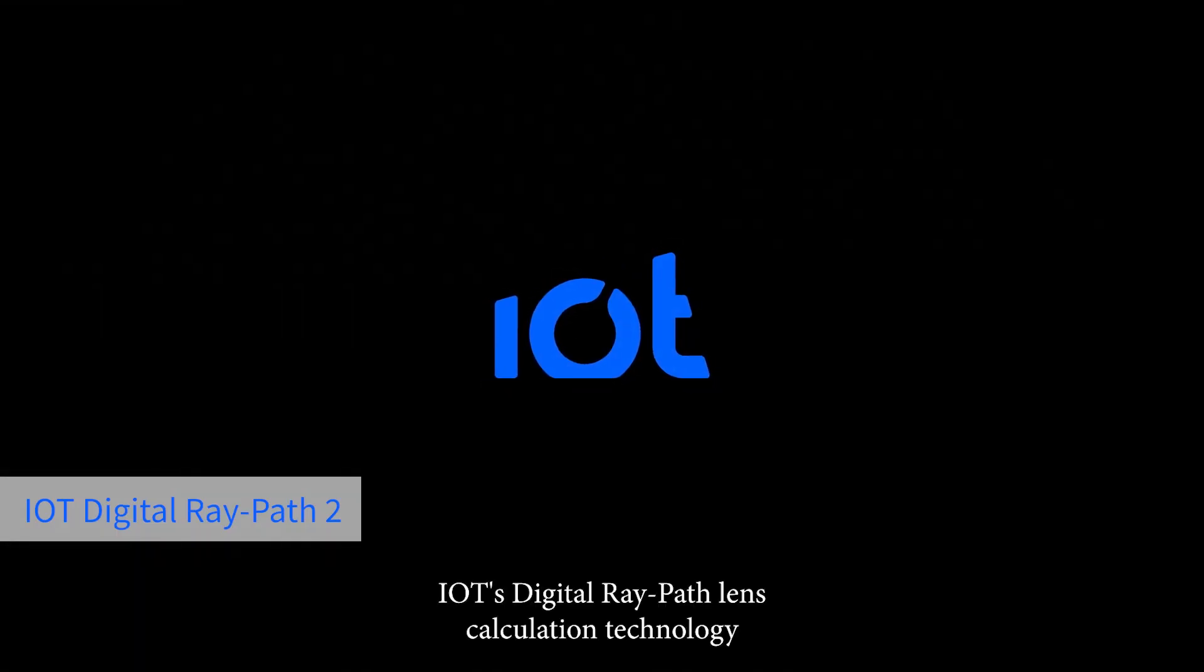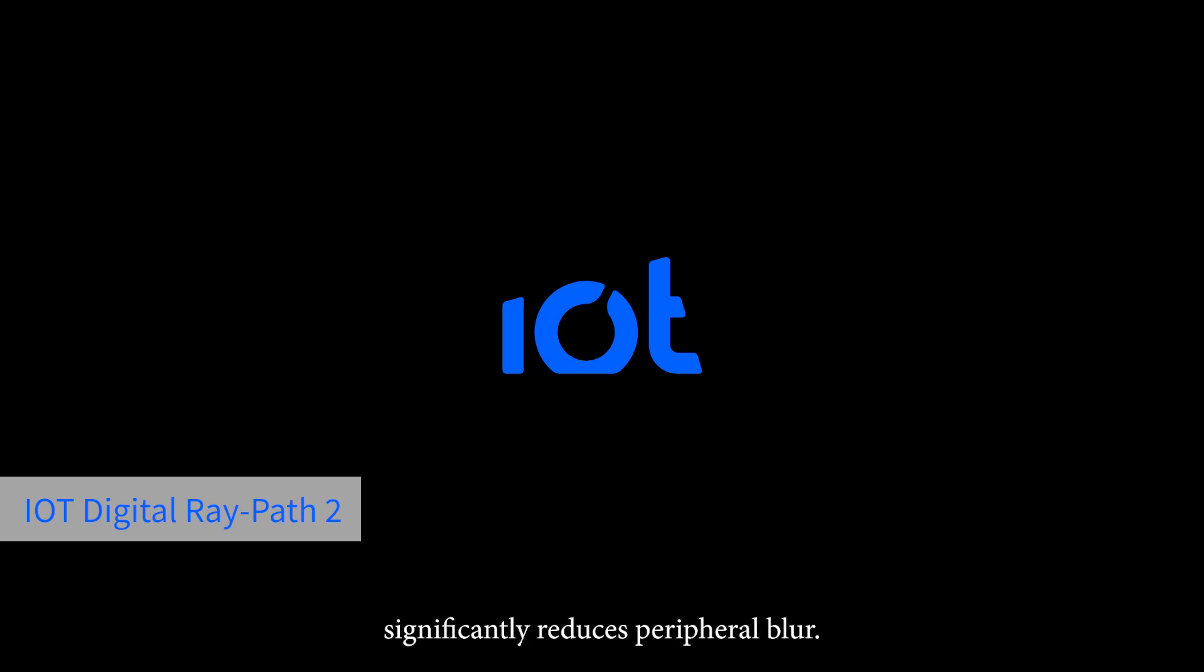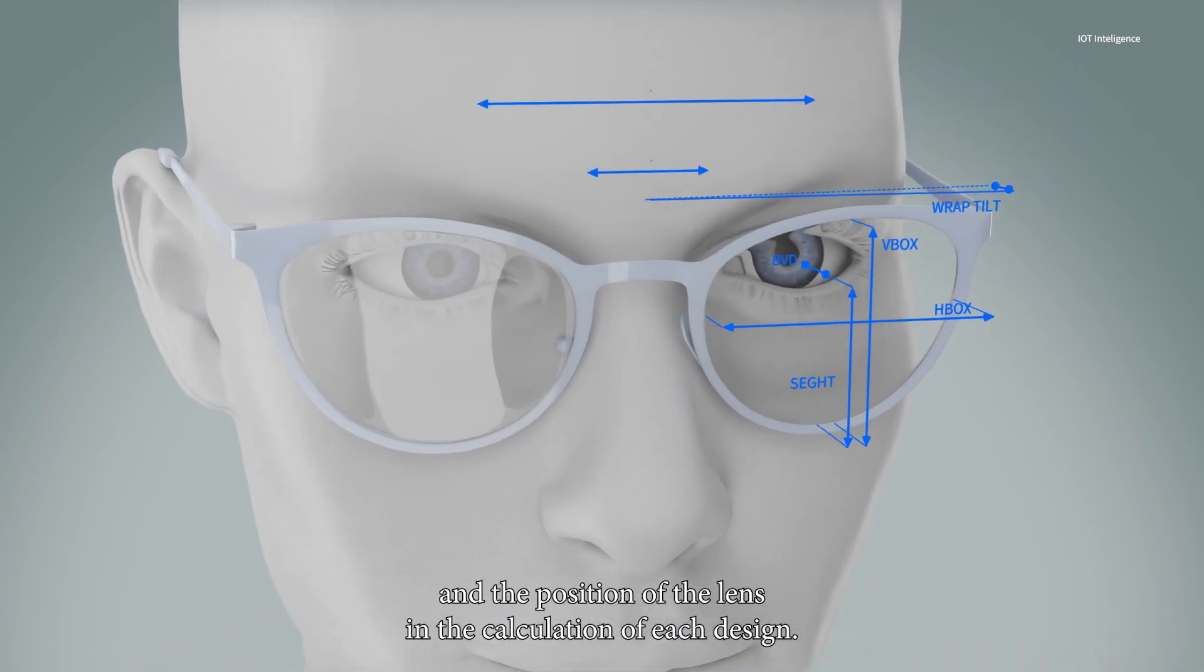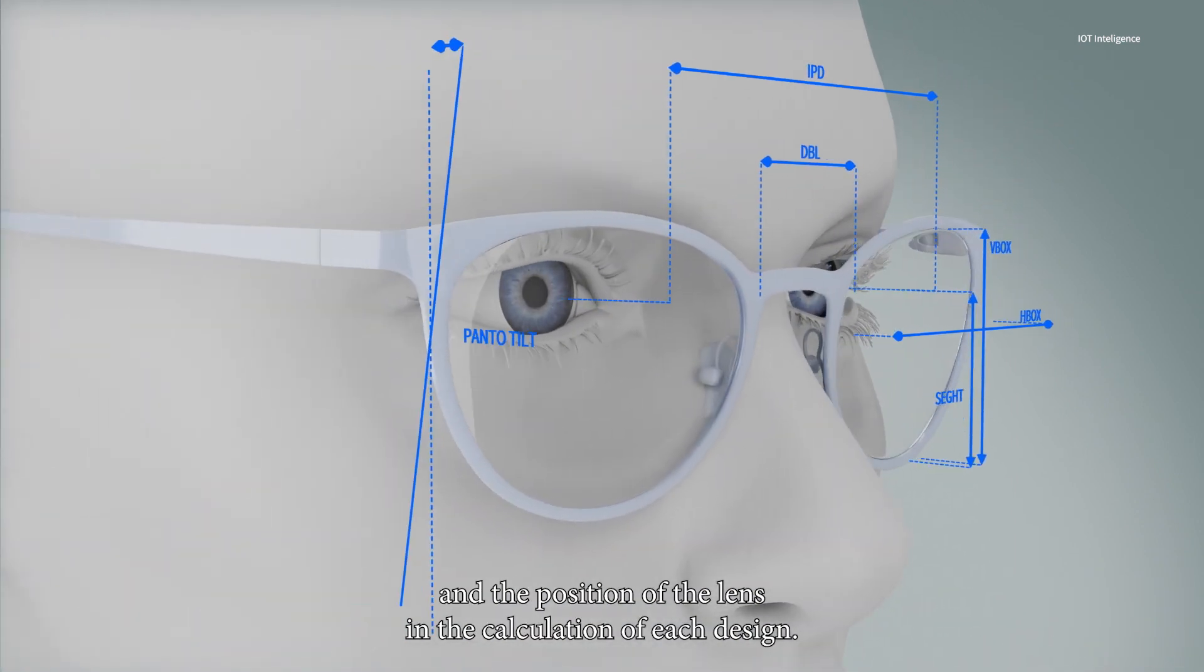IoT's digital ray path lens calculation technology significantly reduces peripheral blur. For this purpose it considers the wearer's parameters and the position of the lens in the calculation of each design.